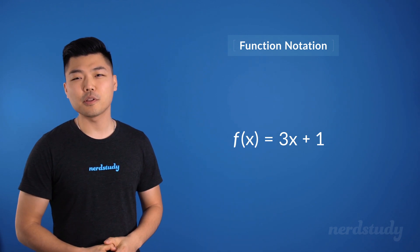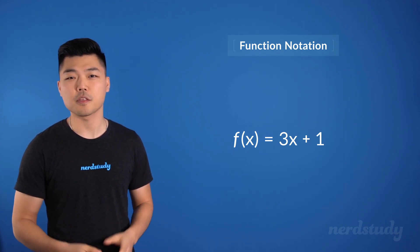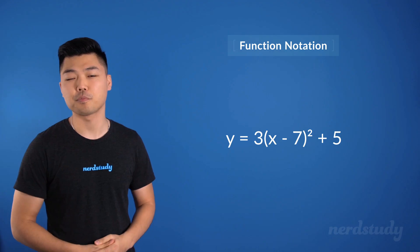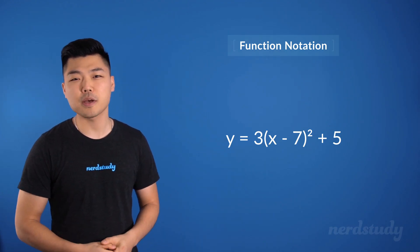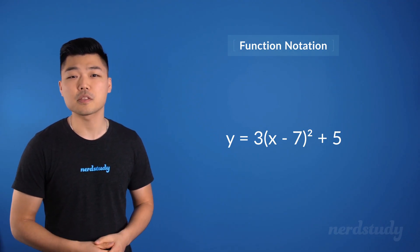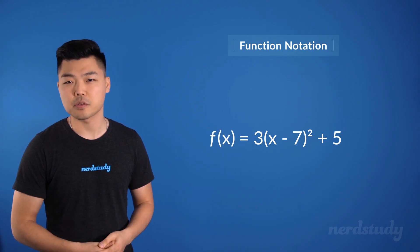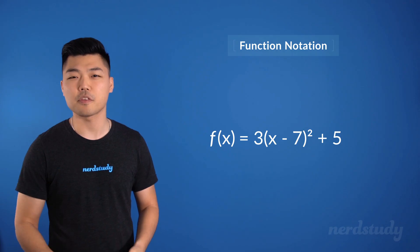Another example of an equation that we can write in function notation is the quadratic function. So instead of writing y equals three times x minus seven squared plus five, for example, we can instead replace the y with f of x to get the following and it would essentially be the same thing.